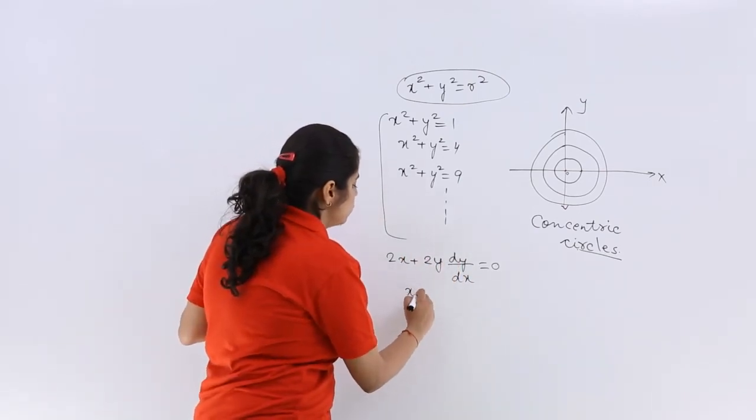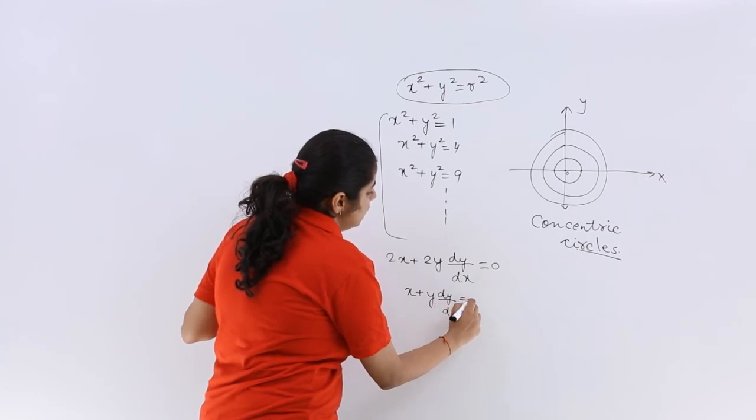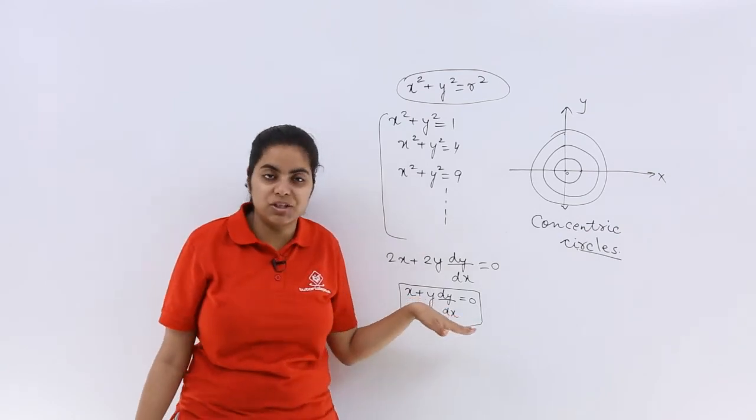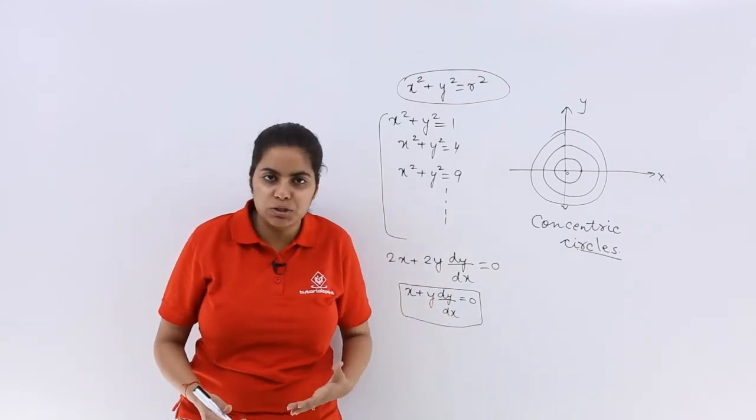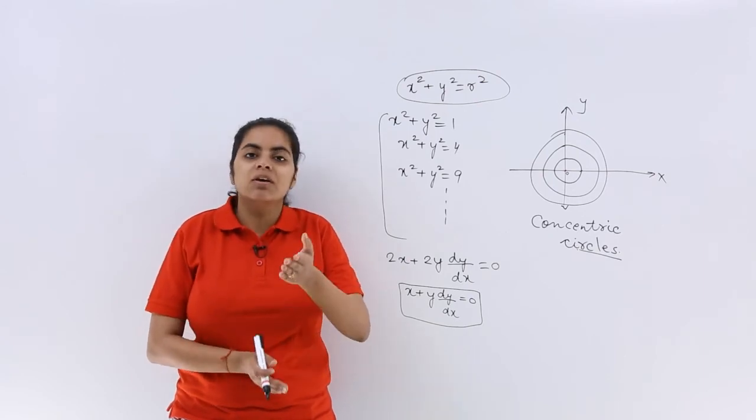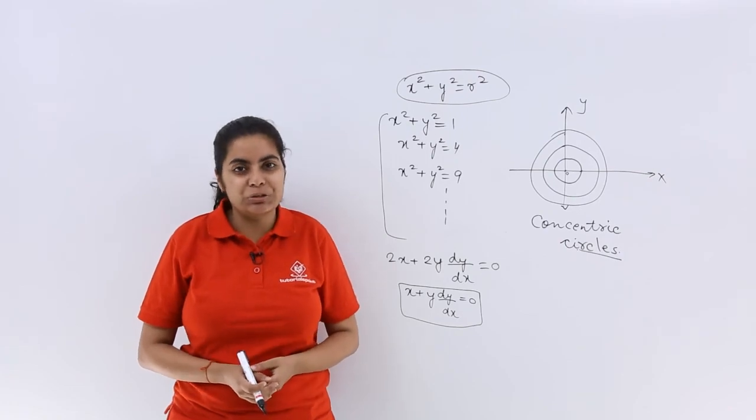You can take 2 common, so it becomes x + y(dy/dx) = 0, which is the required differential equation for this situation. Now you know what to do to obtain a differential equation: we have to differentiate, and how many times will depend on the situation.